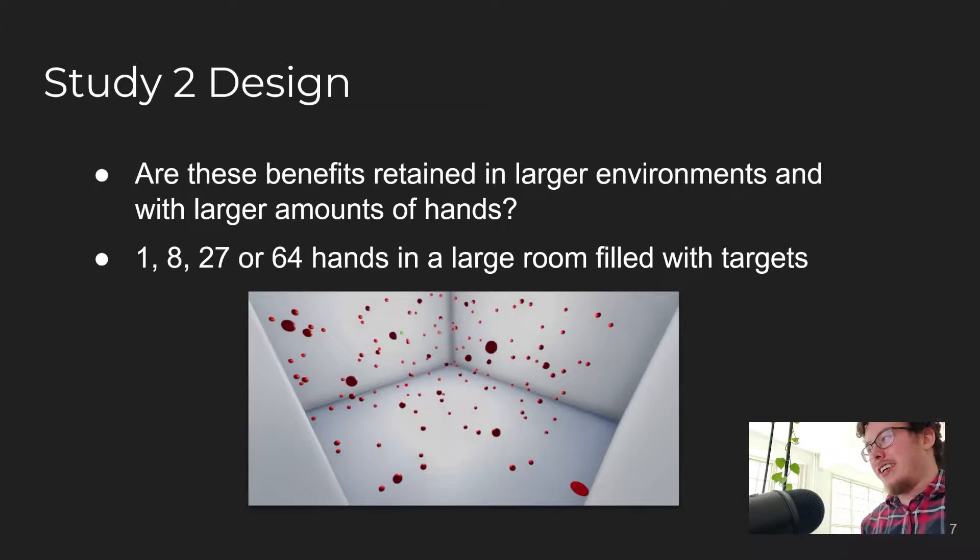By expanding the target selection task to the entirety of the virtual room, which is a 10 by 5 by 10 meter environment, as seen in the figure here. The red circle on the floor at the back is the user's location, and as in the first study, distractors are generated in place using Poisson disk sampling. We also significantly increased the number of hands, comparing 1, 8, 27, and 64 evenly distributed hands.